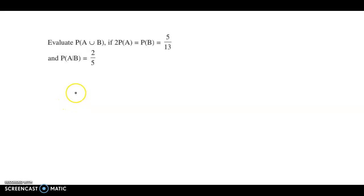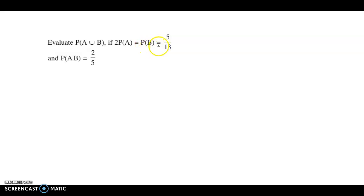Hello and welcome back. Now let's discuss an example from probability. The question is: evaluate probability of A union B, if 2 times probability of A is equal to probability of B, which is equal to 5 by 13, and probability of A given B is 2 by 5.